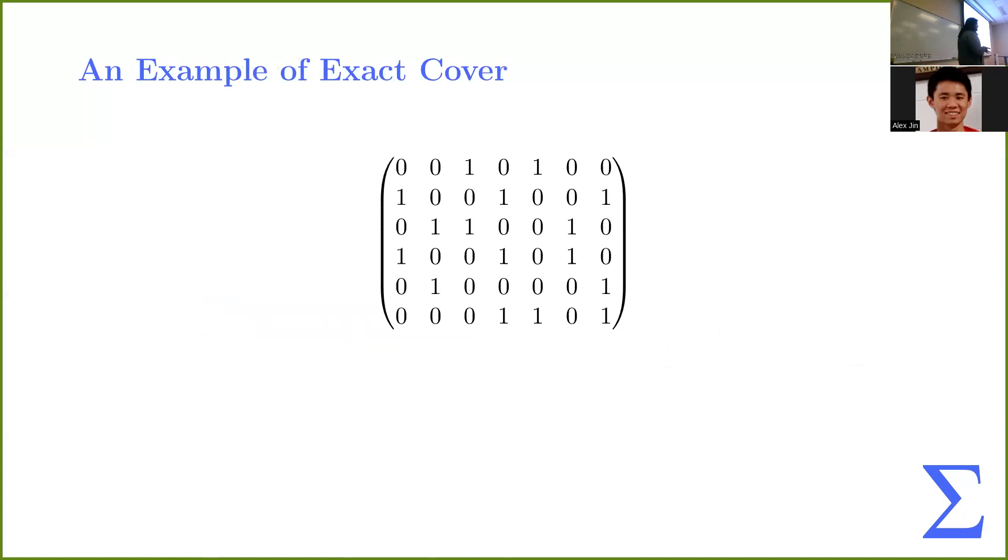So, what is exact cover? So, as it implies, our goal is to cover a list of items with some chosen subsets and select each item exactly one time. And let's run through a nice example. So, let's just look at this matrix. And the goal of the game is to choose rows of the matrix, such that if I look vertically along your chosen rows, each column contains only exactly one one.